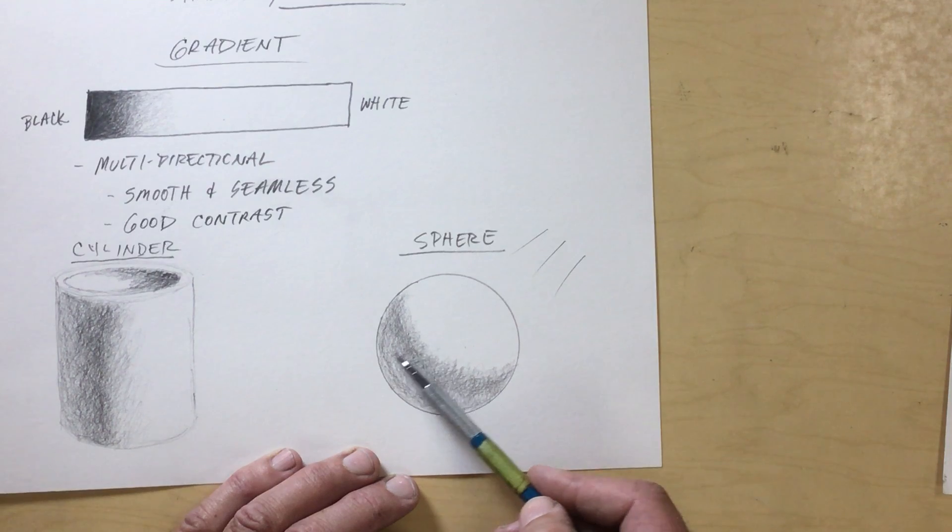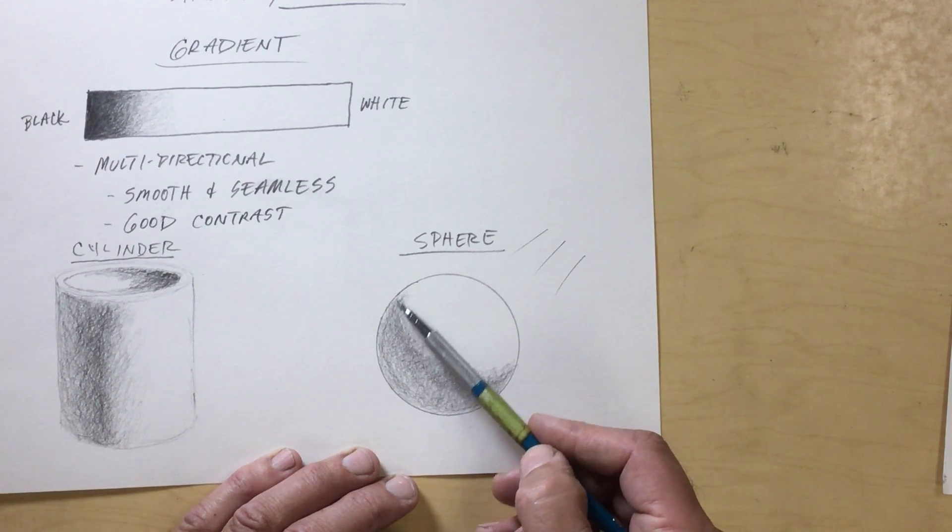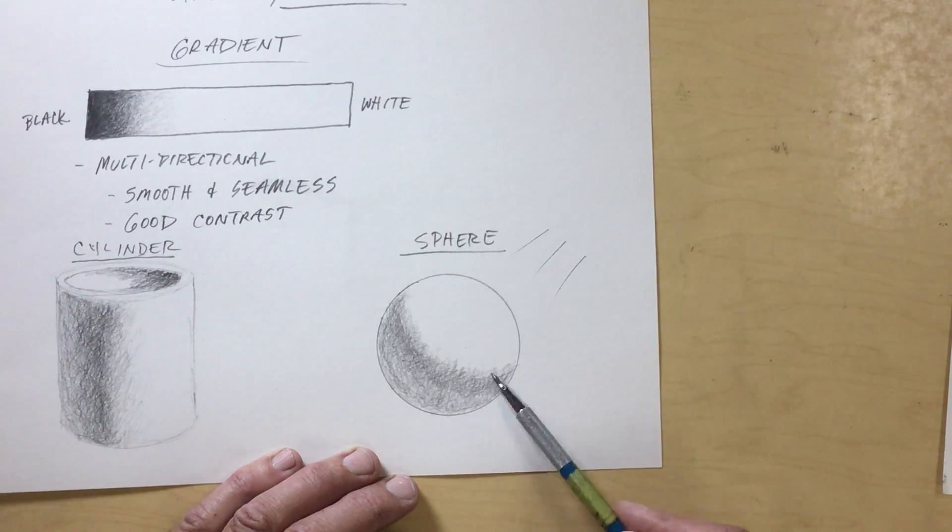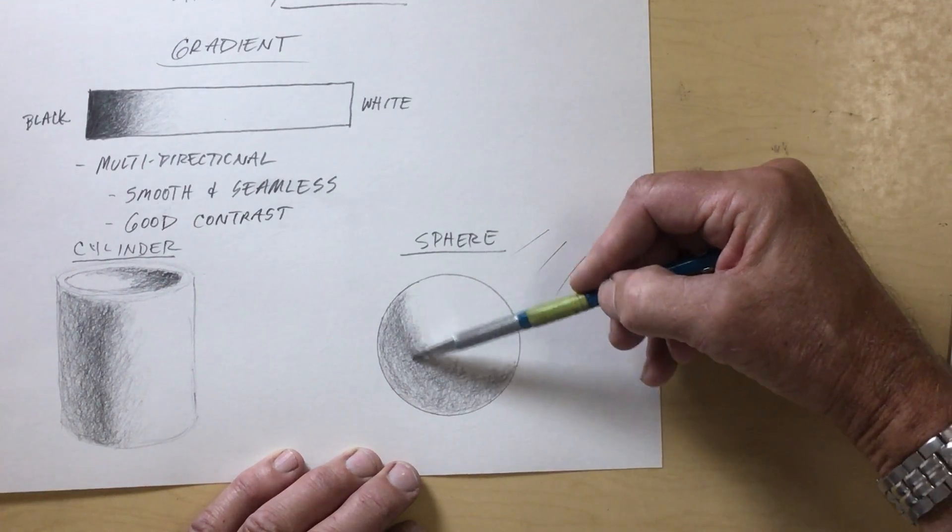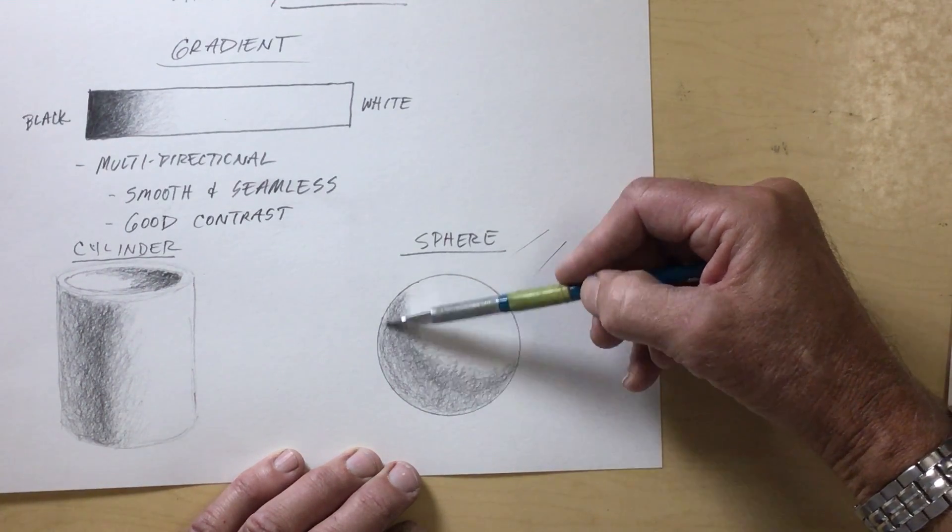You just have to relax and not be in a hurry, and just slowly build it up. So we'd make that a little bit darker, then we can start to fade it out.